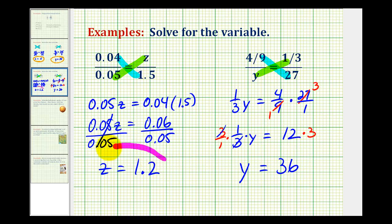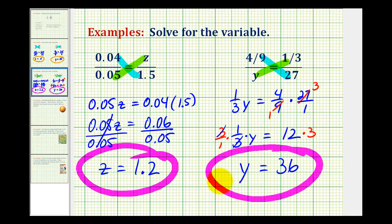So we had z equals 1.2 for the first example, and we had y equals 36 for our second example.